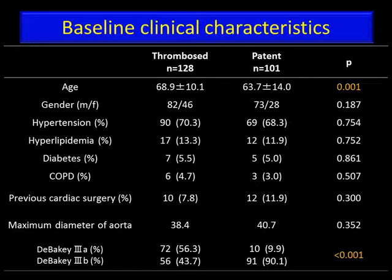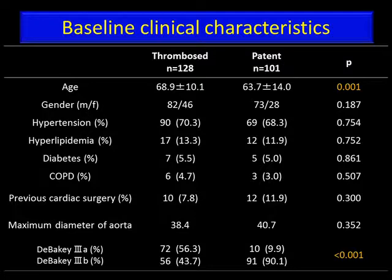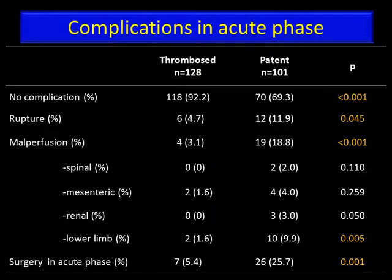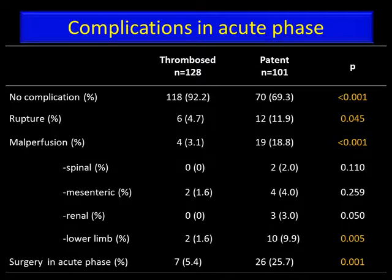I'd like to show the baseline clinical characteristics. The mean age was significantly higher in the thrombosed group than in the patent group. The proportion of DeBakey classification type 3B was significantly higher in the patent group, meaning that extension of aortic dissection to the abdominal aorta was seen more frequently in the patent group. The proportion of patients without complication was 92.2% in the thrombosed group and 69.3% in the patent group, which was significantly different.